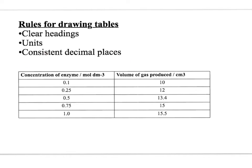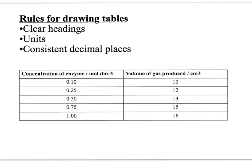An area where it's easy to lose marks is not using consistent decimal places. Sometimes the question will say use one decimal place or two decimal places. In this example, we don't have consistent decimal places — two values have two decimal places and three have one decimal place. The corrected version shows each concentration value to two decimal places, and the other column to no decimal places.